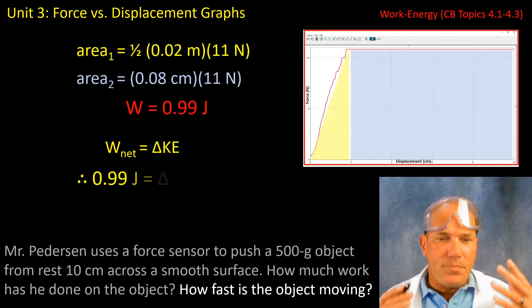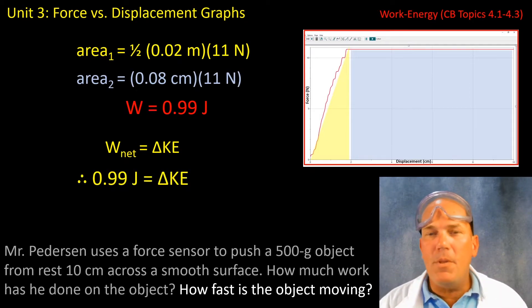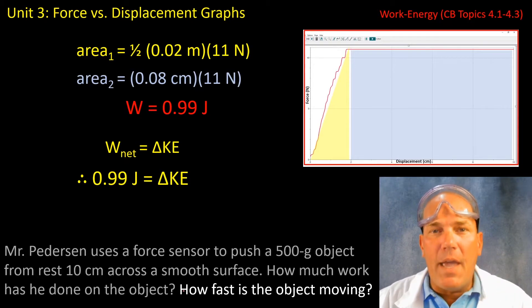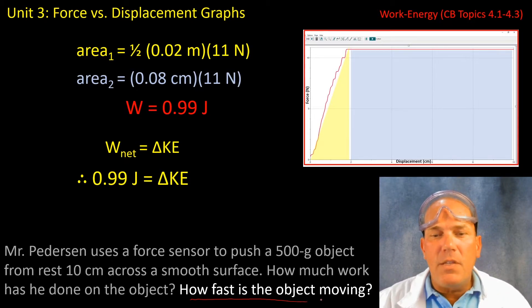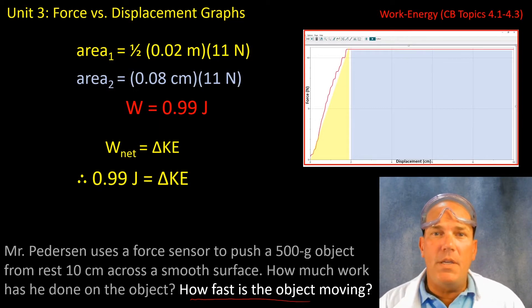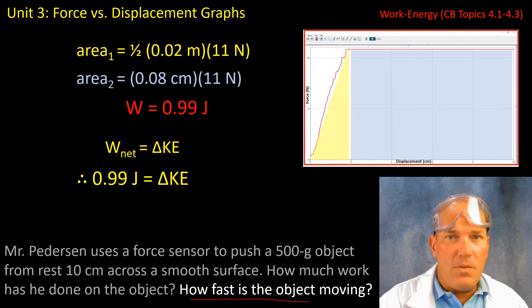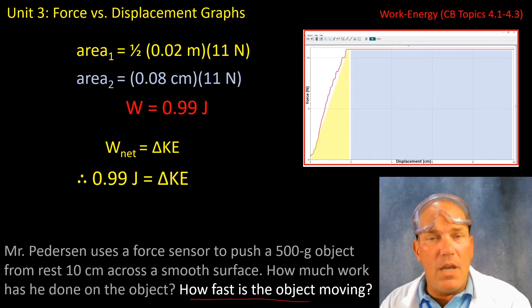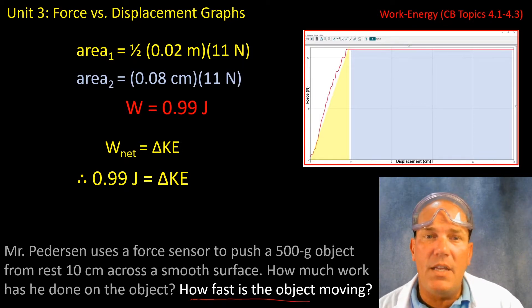So in this particular problem here, you are now being asked, how fast is the object moving? Well, that means we can use the net work that we found by calculating the area under the graph. And we can set that equal to the change in kinetic energy.